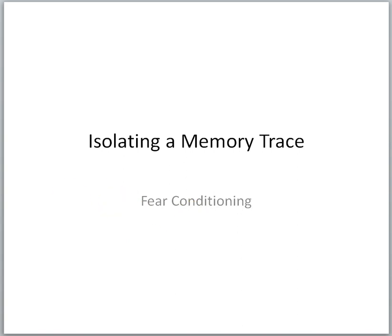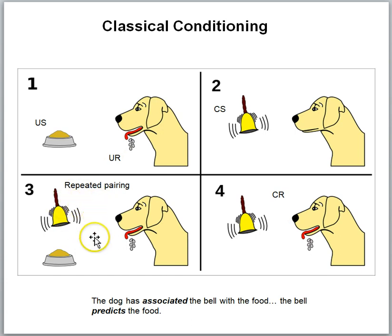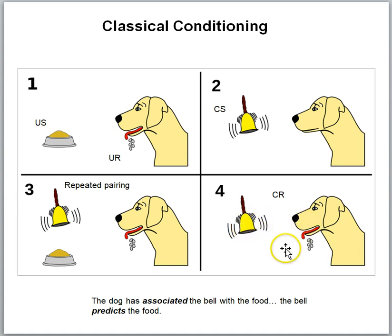Fear conditioning is a specific example of a more general phenomenon called classical conditioning, and we've already seen in a previous lesson that we can train a dog to salivate to the sound of a bell. We ring the bell, then present the food, and pretty soon the animal will salivate to the bell alone. It's as if the bell is predicting the presence of the food, so the dog is associating the sound of the bell with the presentation of food.